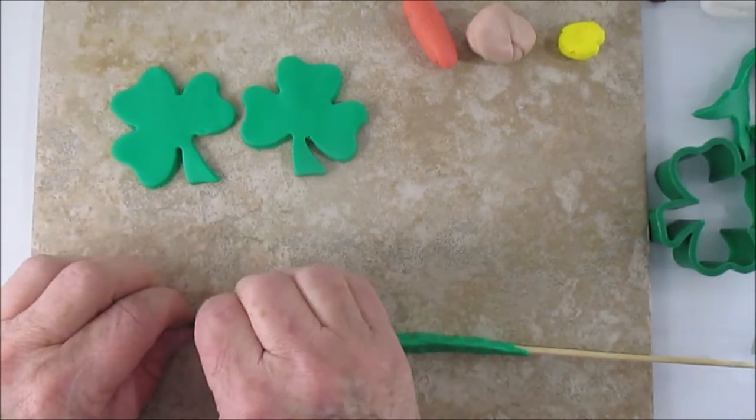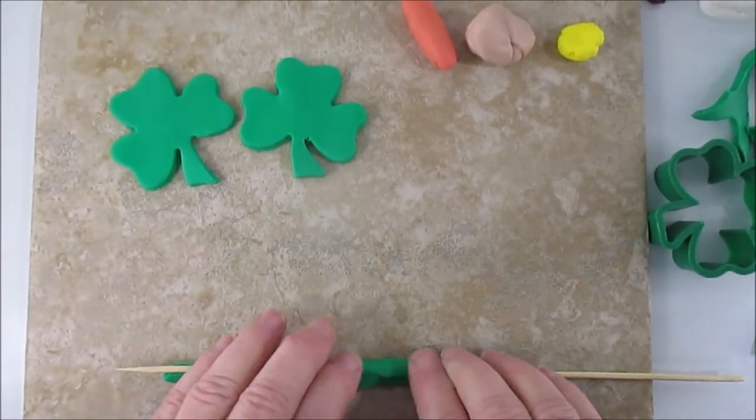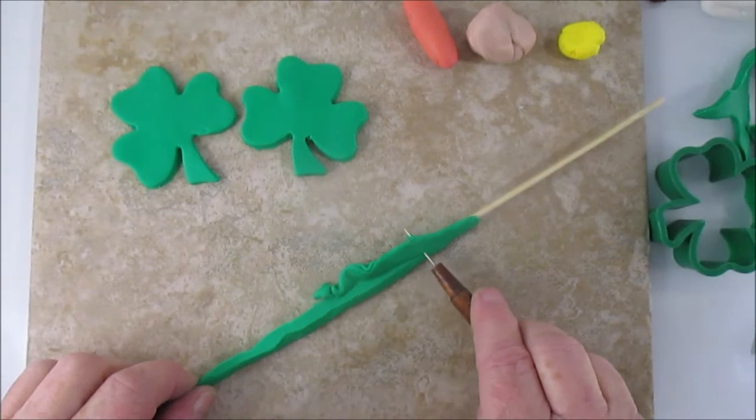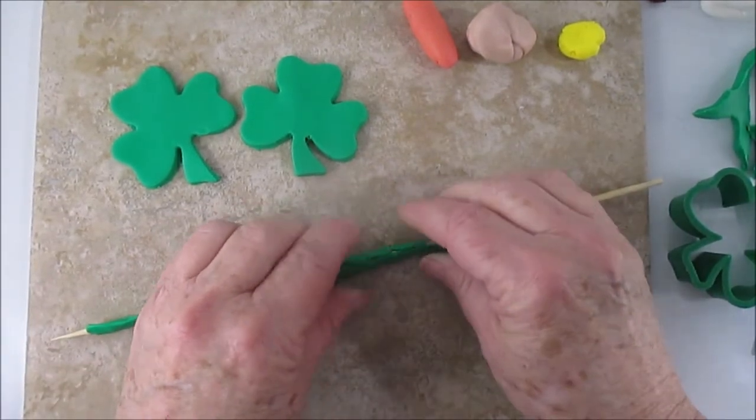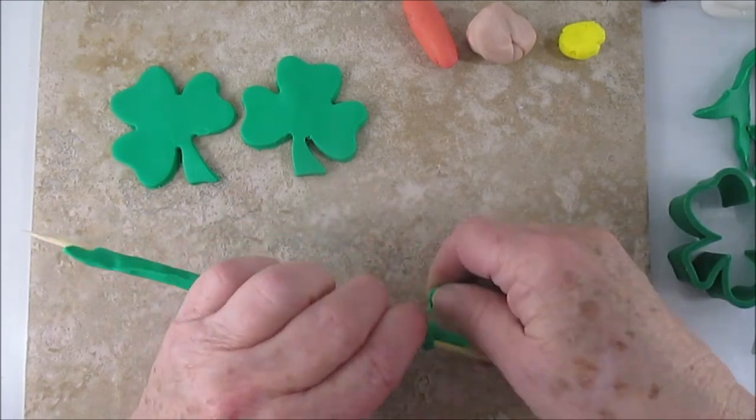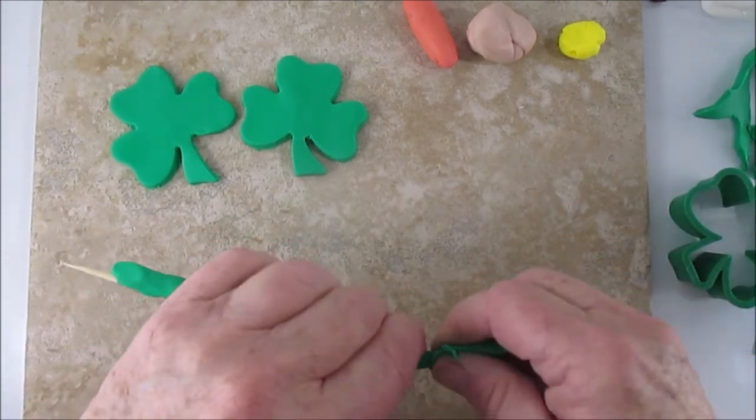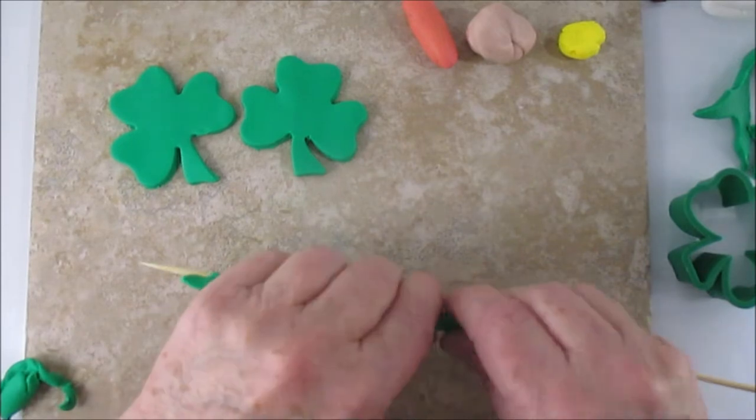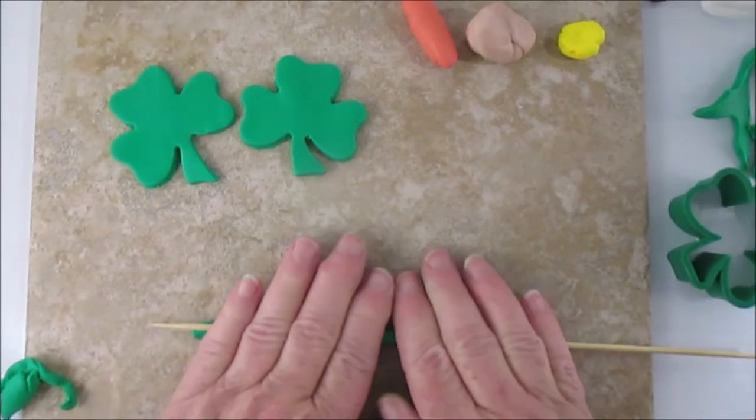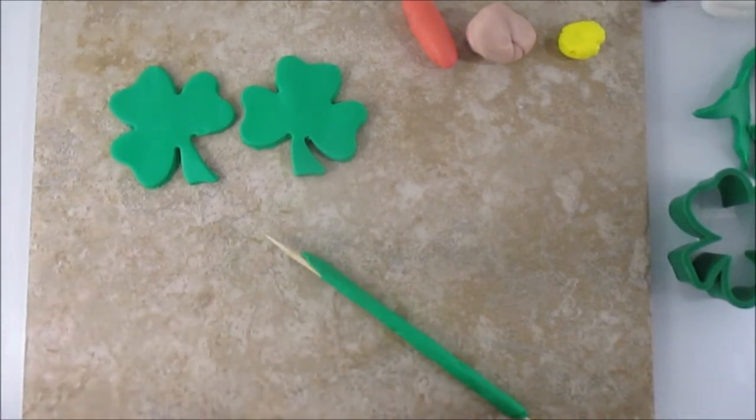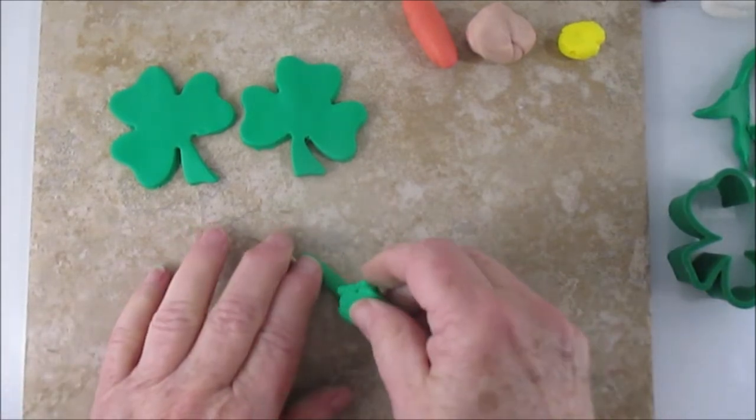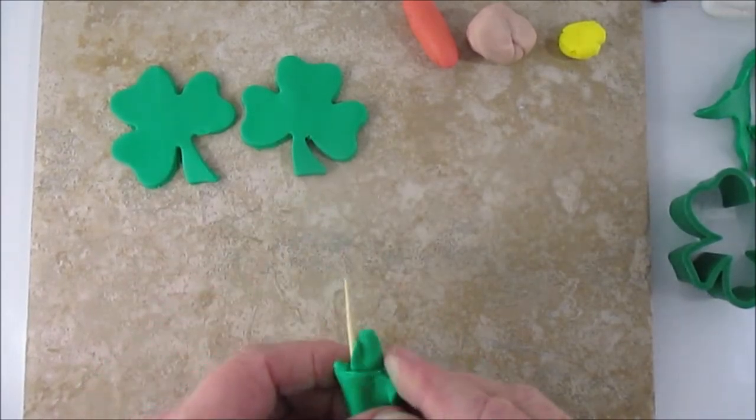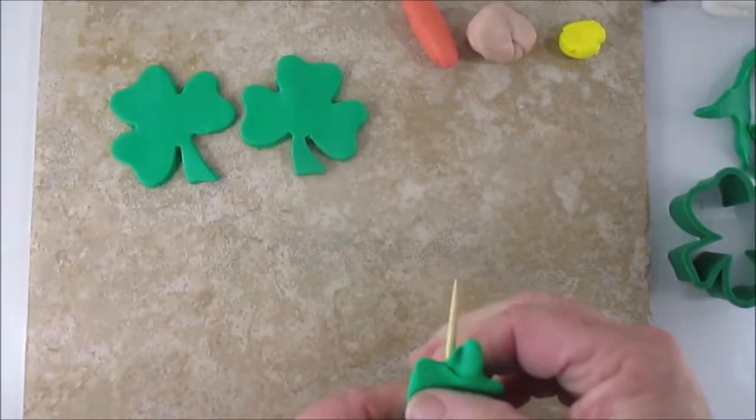You really don't need this much clay here. You just need enough where you can put your shamrocks on because you can actually paint the rest of your stick. I did not paint mine but I was going to paint it green, which cuts down on the amount of clay you need. You want to have enough stick at the bottom where you can put it into whatever you're sticking it into without the clay going in.